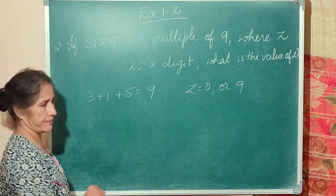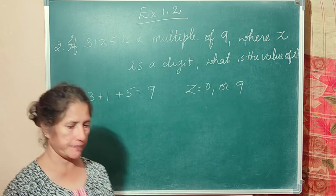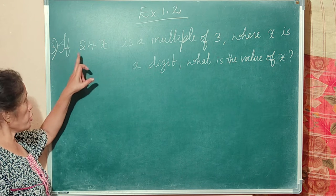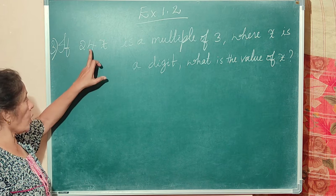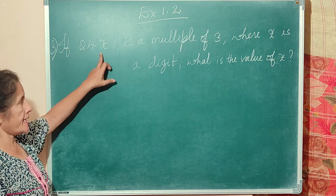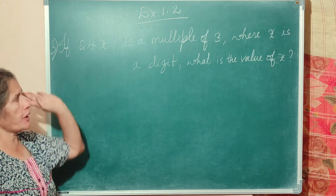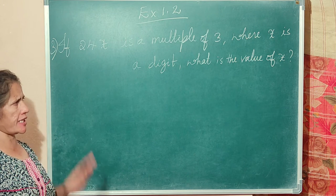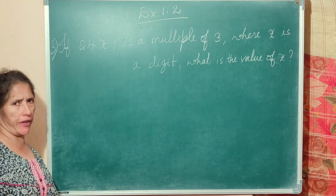Now the third question: if 24x is a multiple of 3, where x is a digit, what is the value of x?